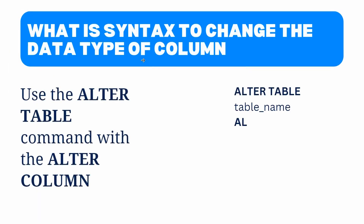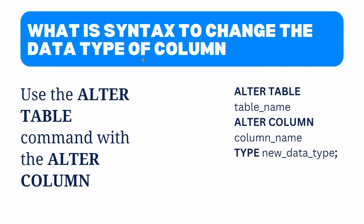What is the syntax to change the data type of a column in PostgreSQL? There are two ways to change the data type of a column in PostgreSQL. The first one is using ALTER TABLE with the ALTER COLUMN command. To change the data type of a column, use the ALTER TABLE command with the ALTER COLUMN option.